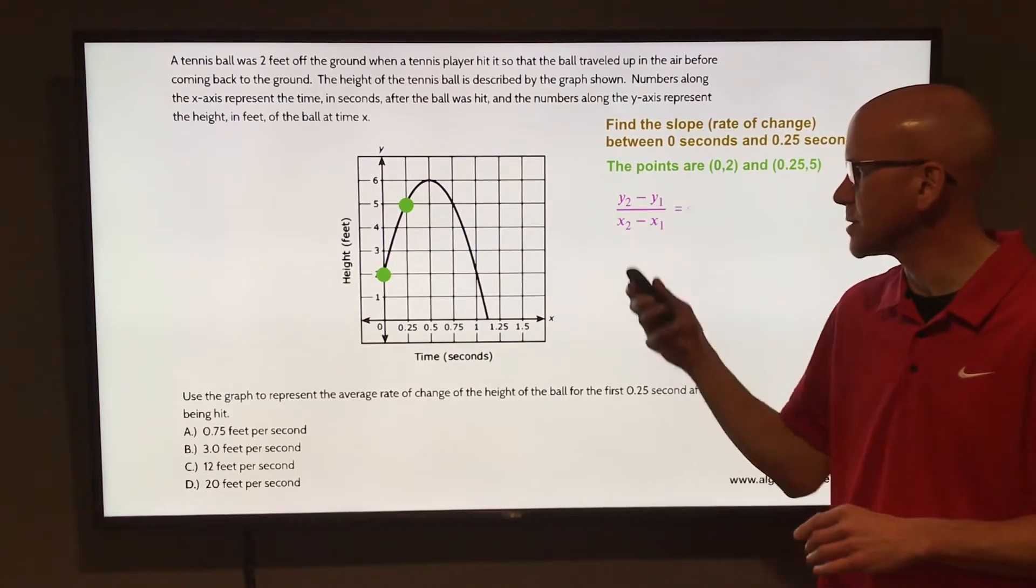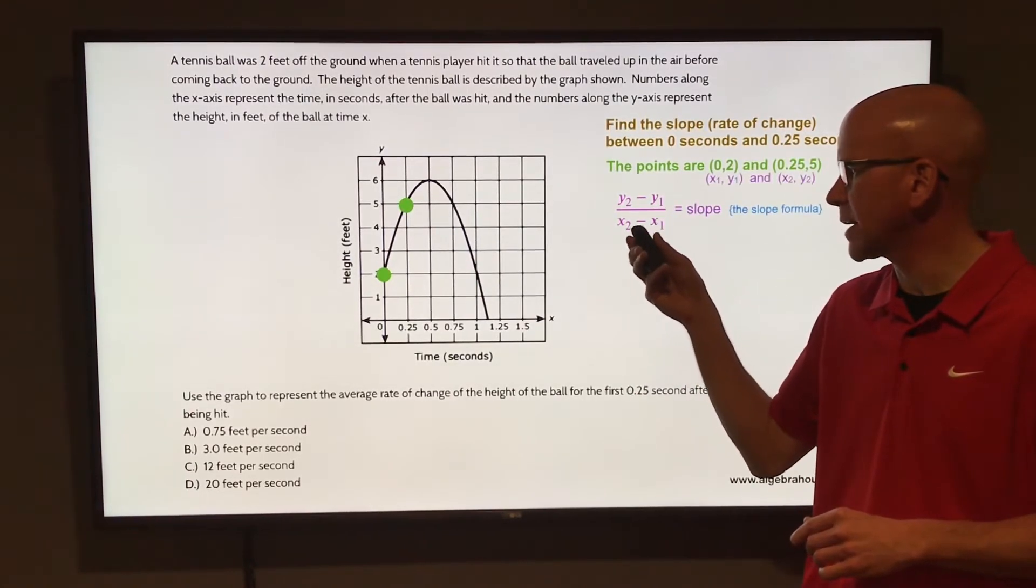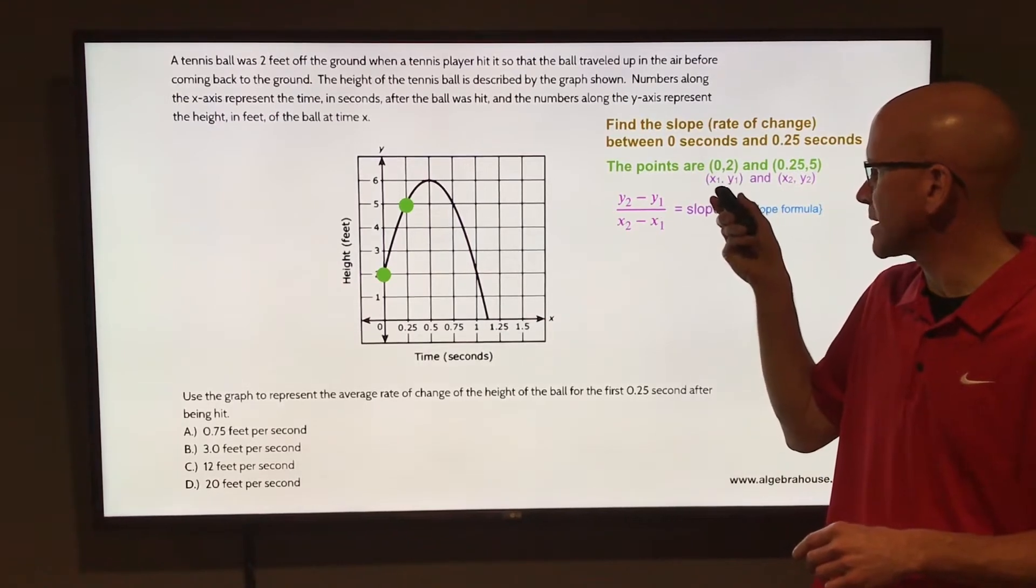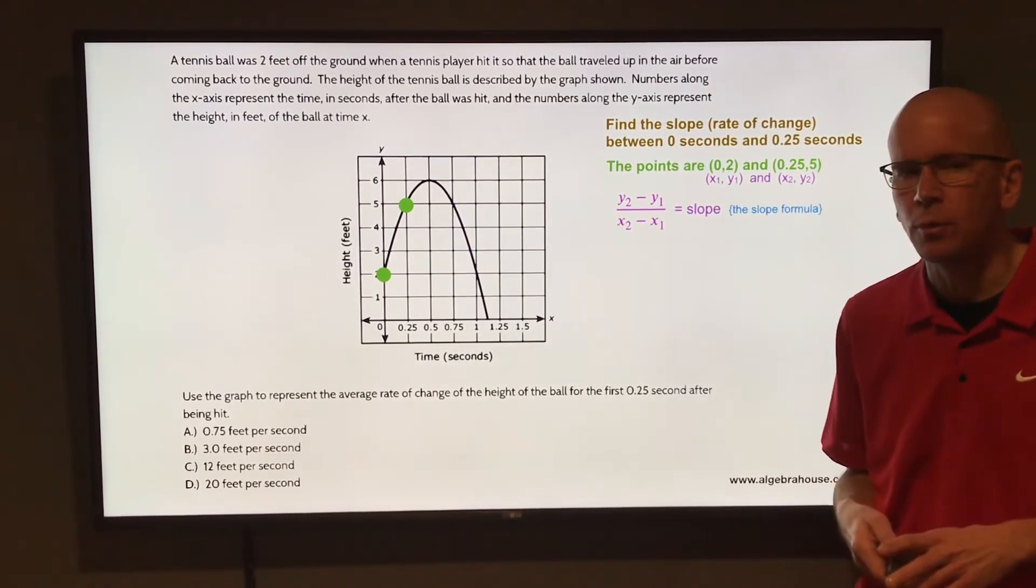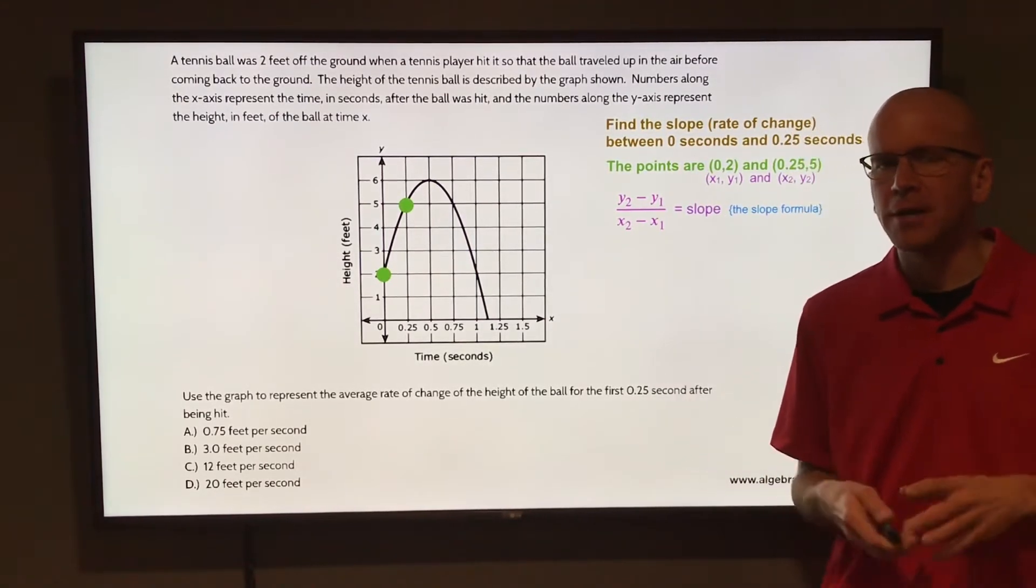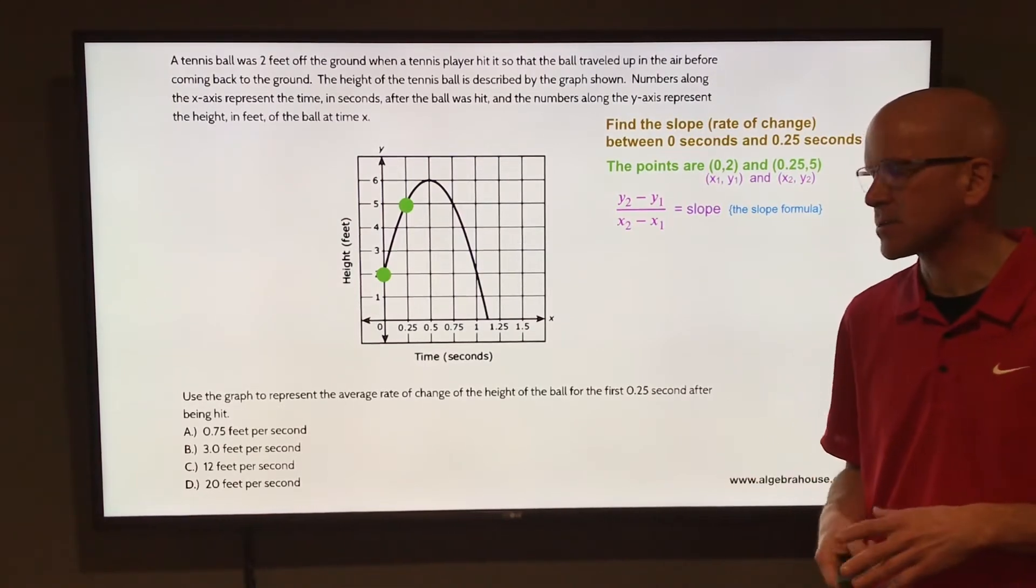To find the slope, you can use the slope formula y2 minus y1 over x2 minus x1, where that first point would be x1, y1, second point would be x2, y2, or just think of finding the change in y over the change in x, or rise over run.